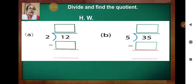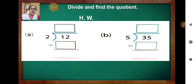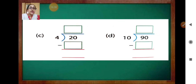Now, divide and find the quotient — this is your homework. Question A: twelve divided by two. Question B: thirty-five divided by five. Question C: twenty divided by four. Question D: ninety divided by ten. Say the tables and do it.